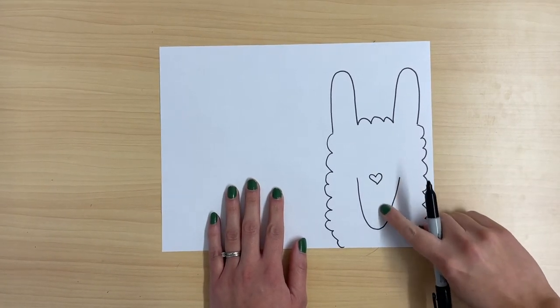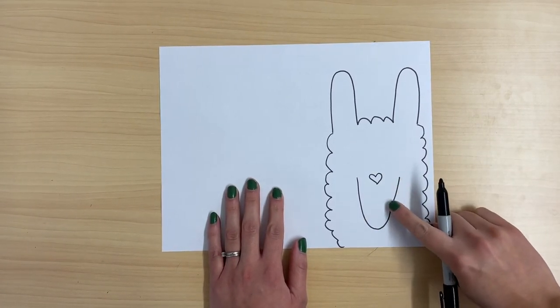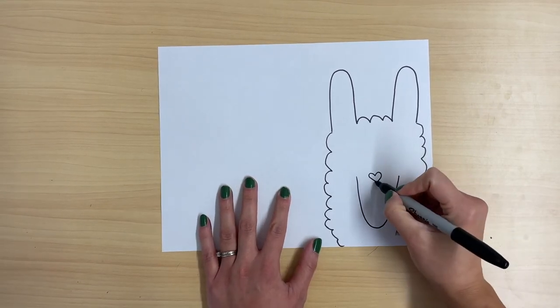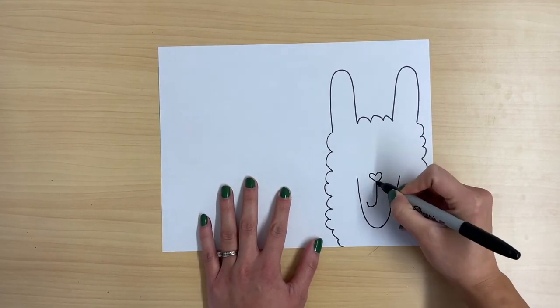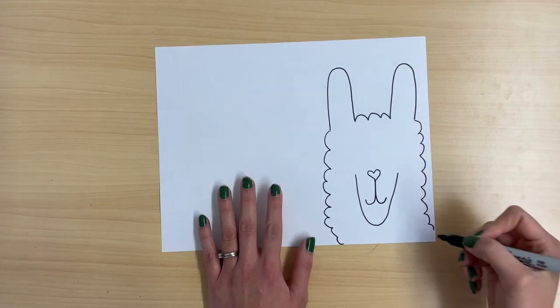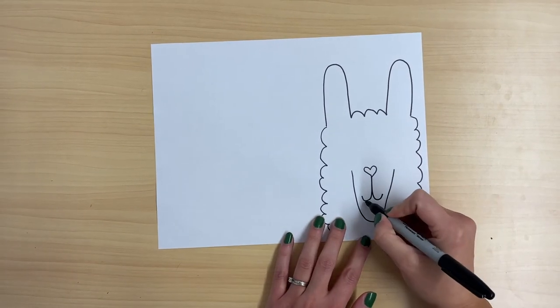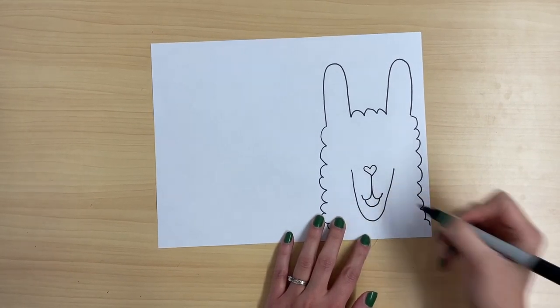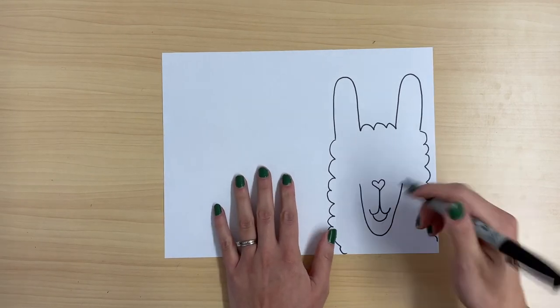So from the nose, I'm going to draw two curved lines for the mouth, down and curve, down and curve. Then I'm going to draw one more curved line like that.